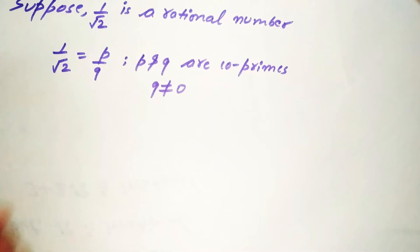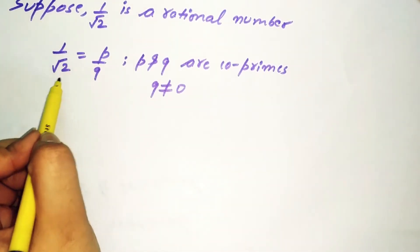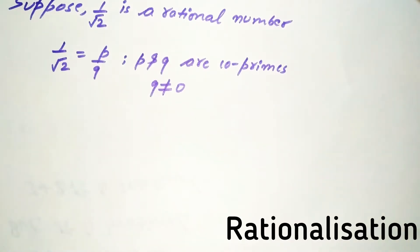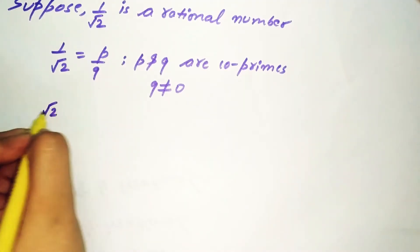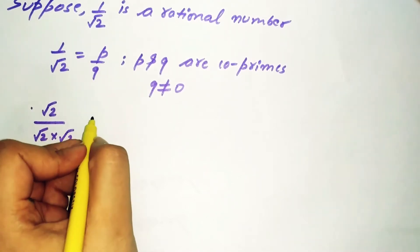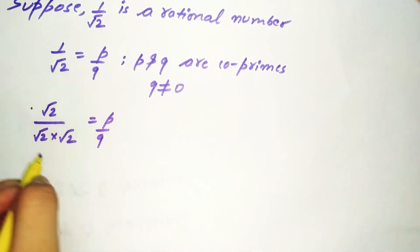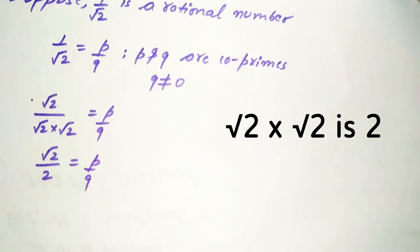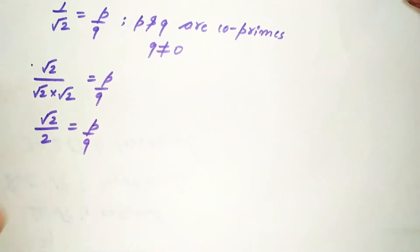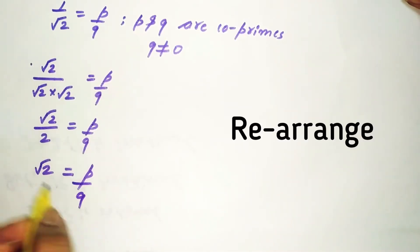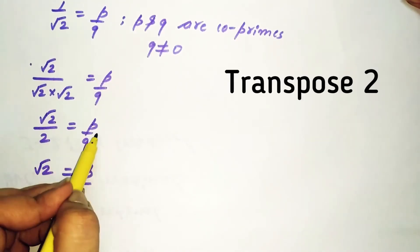But we have an under root term in denominator, so we'll rationalize it. Multiply and divide numerator and denominator by root 2. Now we'll rearrange this equation and transpose 2 in numerator.